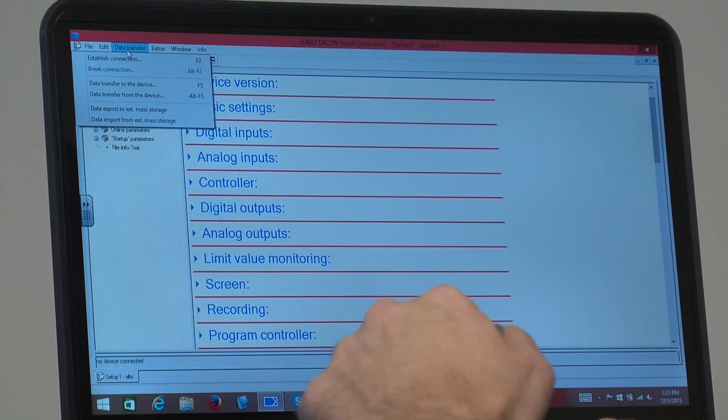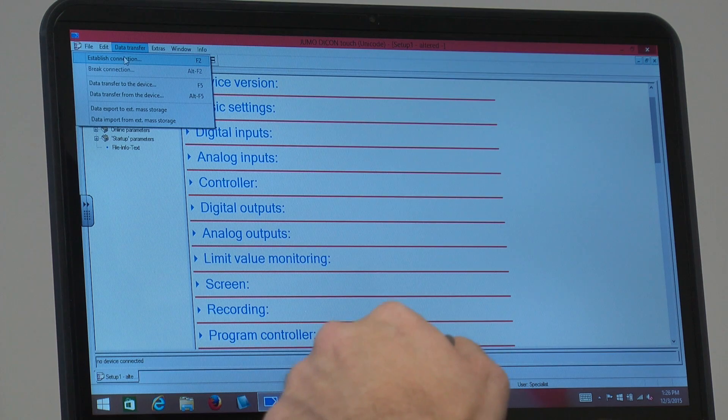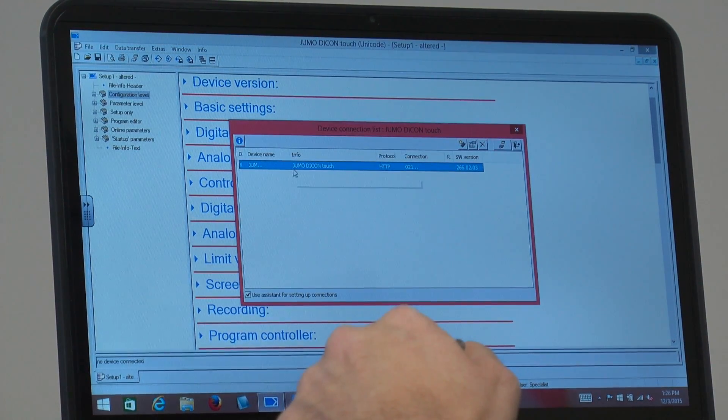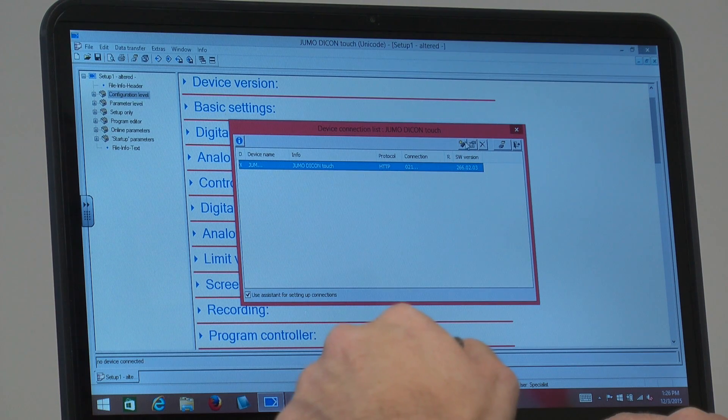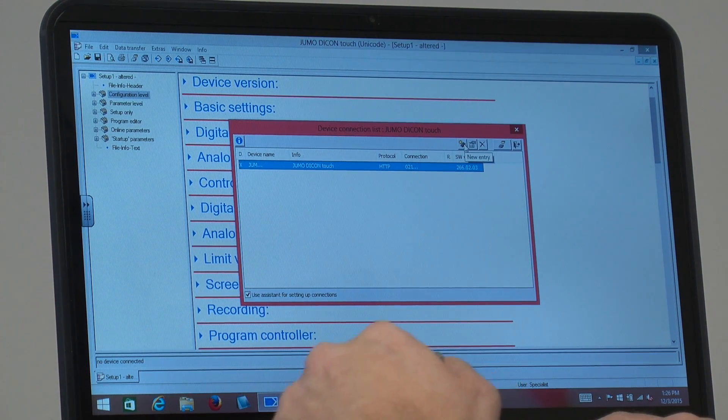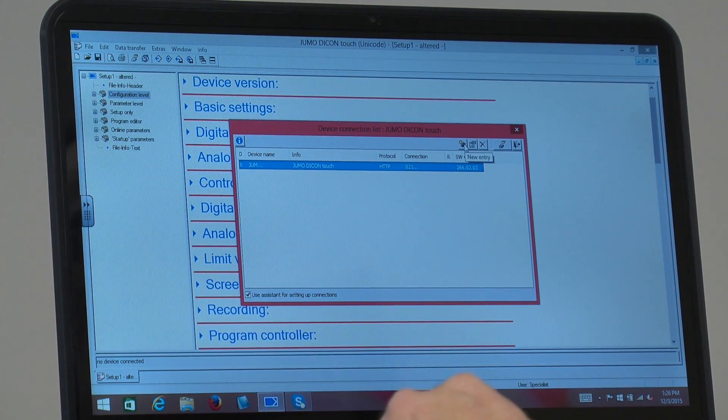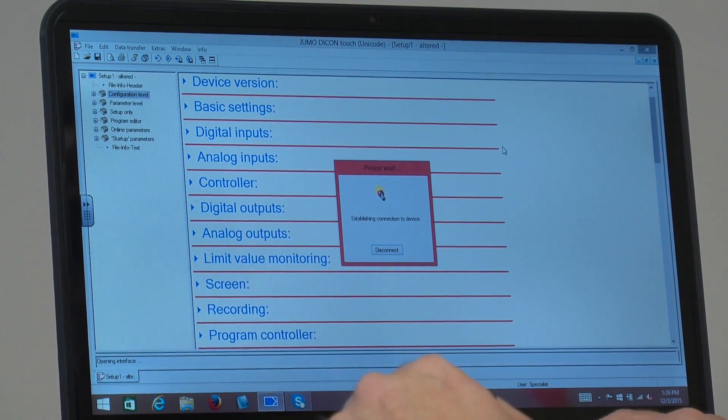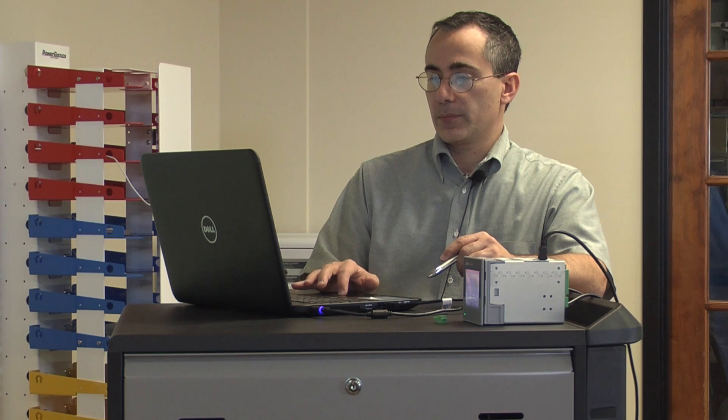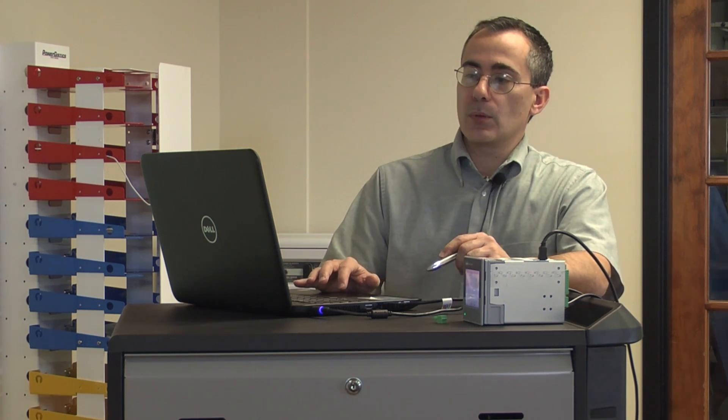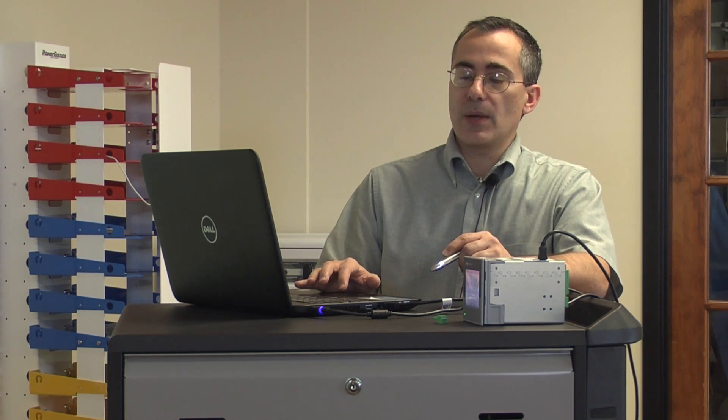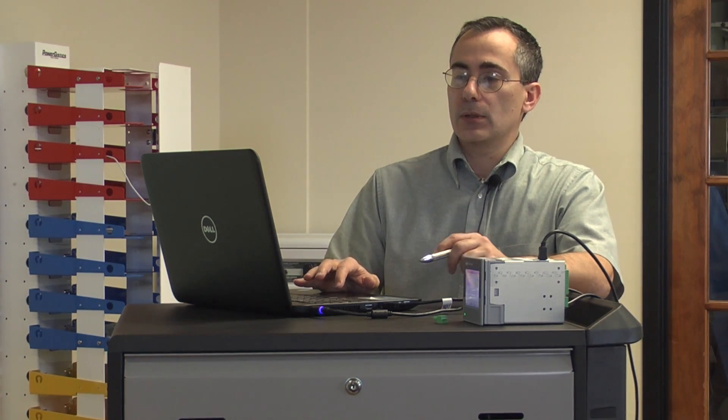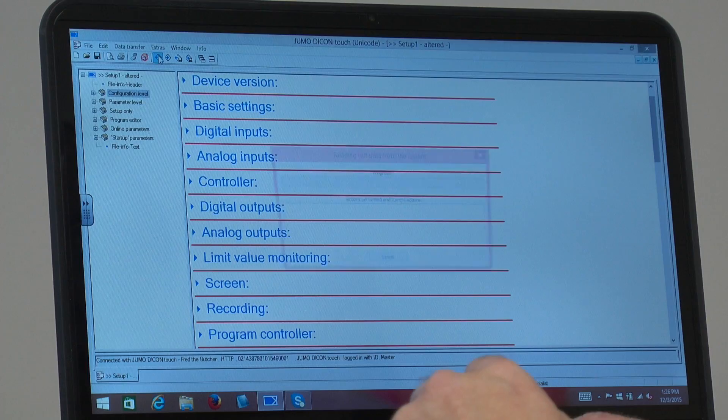So let's continue here. The first thing you want to do is establish a connection with the device. In this case it's already configured. If you click new entry you would be able to set up the unit. I'm just going to click the make connection button. I would recommend you pull the information off of the unit rather than configure it from scratch and download. So that's what I'm going to do here.